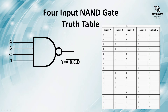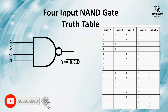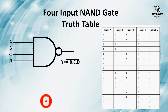Here is the truth table of a 4-input NAND gate with inputs A, B, C, D and output Y. We can see that when any of the inputs or all the inputs are 0, the output is 1. And in the only case when all the inputs are 1, the output is 0. For an AND gate it was just the inverse — when any of the inputs or all the inputs were 0 the output was 0, and when all the inputs are 1 the output is 1. The NAND gate is exactly the opposite.